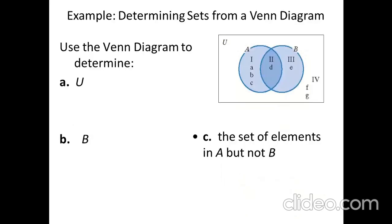If a Venn diagram is given, we can determine the elements of different sets by reading it. For example, if the Venn diagram shows A and B as overlapping sets, elements F and G that are not present in either A or B are written in the rectangular universal set area. Universal set contains elements of all sets under consideration. Reading from the diagram, the universal set becomes {A, B, C, D, E, F, G}.